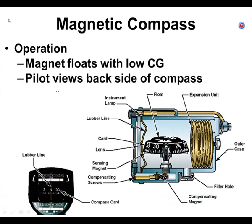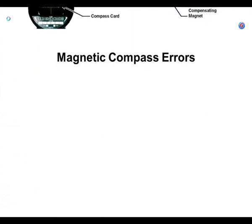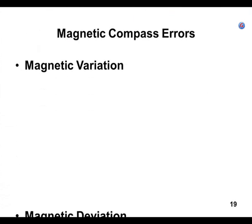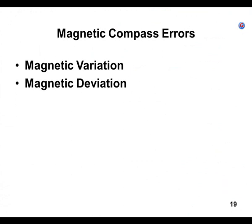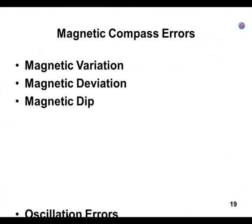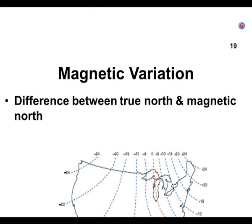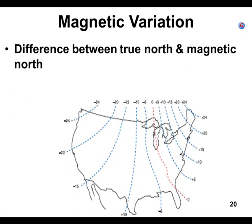This is the slide we covered last time. We talked about variation and we talked about deviation. This is just a list of the four compass errors.